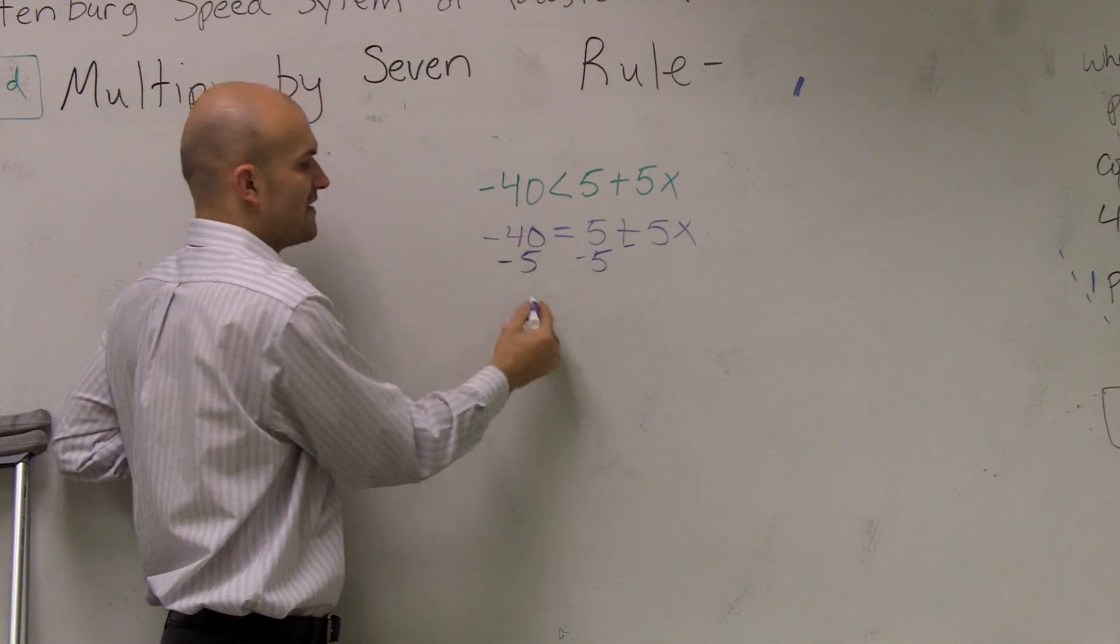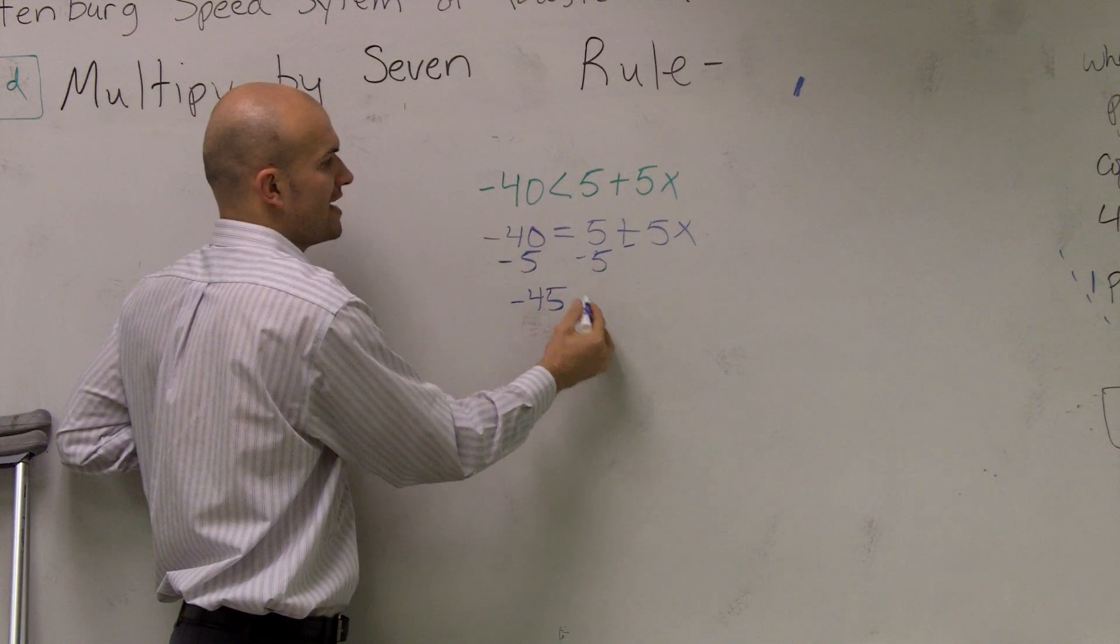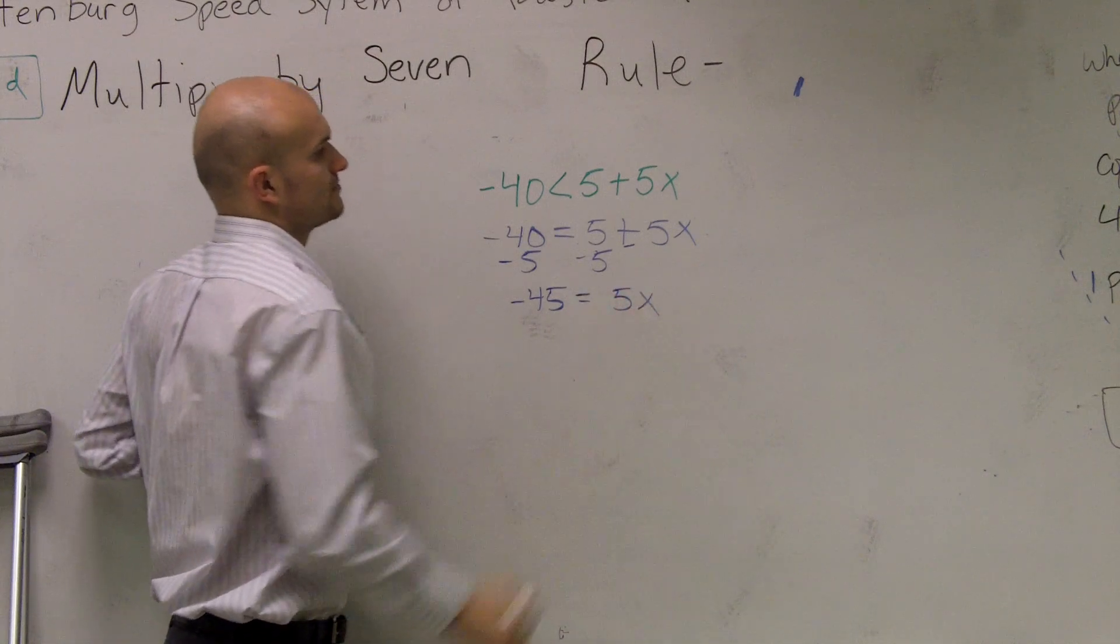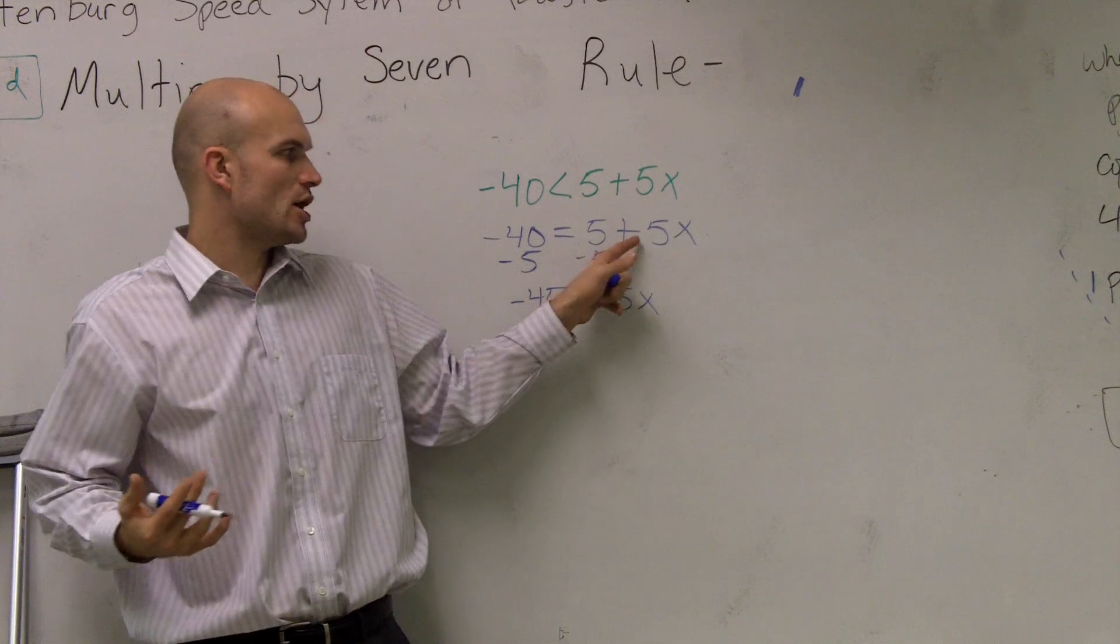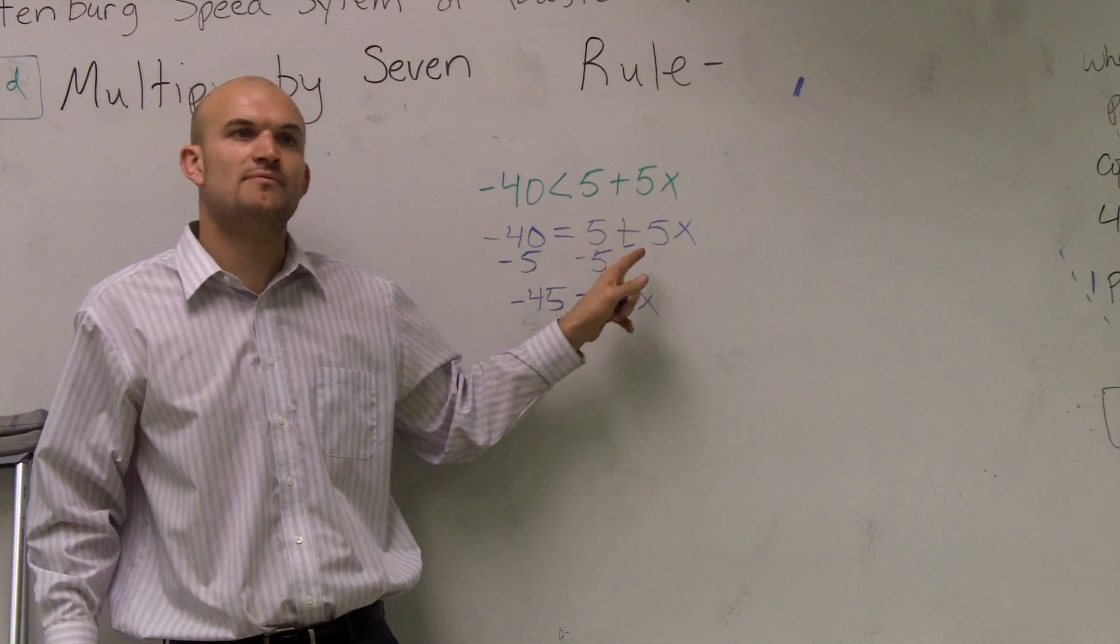So, -40 - 5 is -45 = 5x. Now, the next thing that's a big confusion is people say, oh, well, this 5 is being added because it's a plus in front.